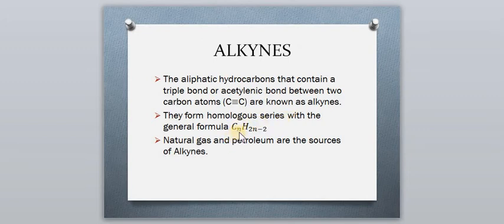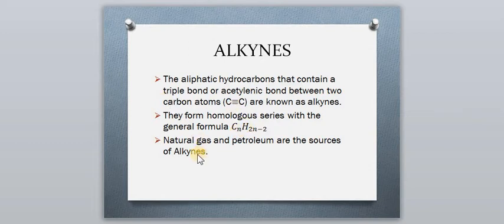Alkynes form a homologous series with the general formula CₙH₂ₙ₋₂, where N indicates the number of carbons. For example, with two carbons in an alkyne (ethyne), N equals 2, giving the formula C₂H₂. The natural sources of alkynes are natural gases and petroleum.